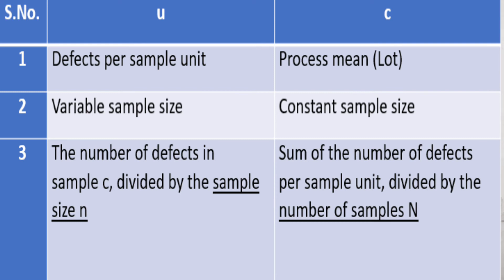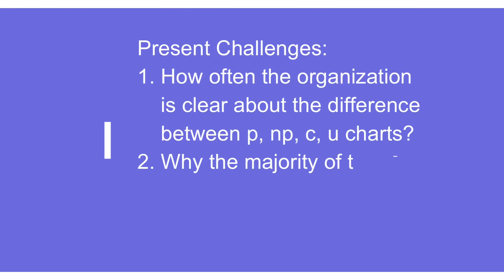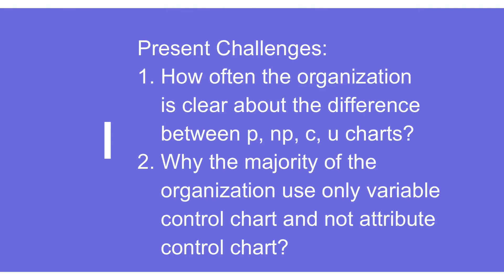These are the key differences between P and NP, U and C charts. Now, we are talking about some of the key challenges that industry is facing. The first challenge is how often the people who are using attribute control charts are aware about the difference between P, NP, C, and U chart. And secondly, why the majority of companies are only using variable control charts and not attribute control charts.